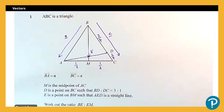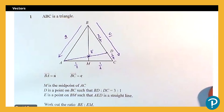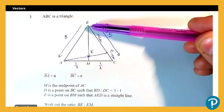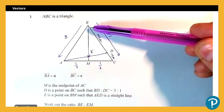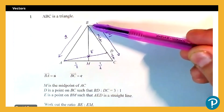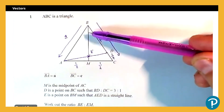When we have a problem like this, we need to form and solve some simultaneous equations. To do that we need to come up with two different expressions for the same vector. The vector I'm going to look at is BE, and I need to find two different routes around the diagram to get BE. The first route is straight down, and I know BE is some multiple of BM — a vector I can write down.